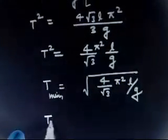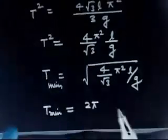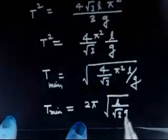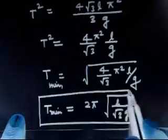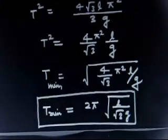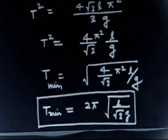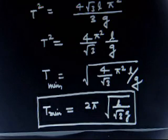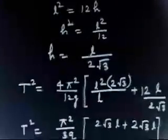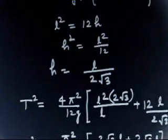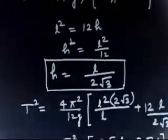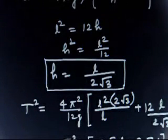We can also write this as T = 2π√(L / (√3·g)). This is the minimum time period possible. So if you have a rod suspended through a point, the minimum time period is 2π√(L/(√3g)), and this minimum occurs when H = L/(2√3). If you remember this result, that is very nice.